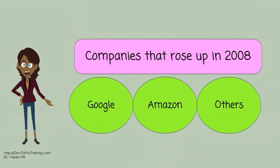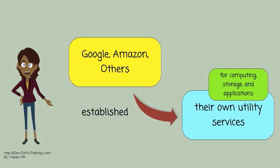Google, Amazon, and others started to take the lead in 2008. These companies established their own utility services for computing, storage, and applications.